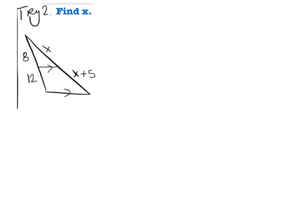For your last try, again we find that there are two parallel lines. So I can use the side splitter theorem. That means that the two transversals are cut proportionally. Go ahead and set up your proportion. And when you finish solving, unpause to see if you got the correct answer.